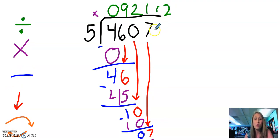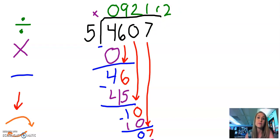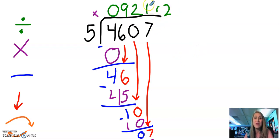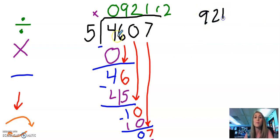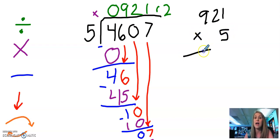So the quotient is 921 with a remainder of two. Now I always check my work. In order to check my work, I'm going to take my quotient, 921, and I'm going to multiply it by my divisor, five. Five times one is five.